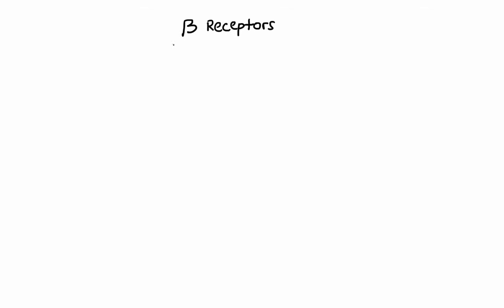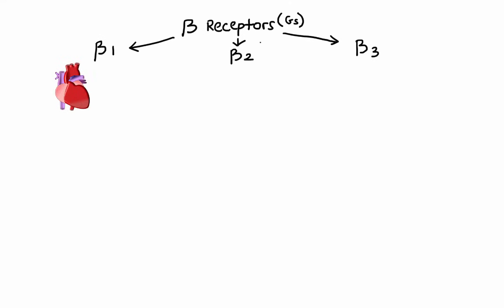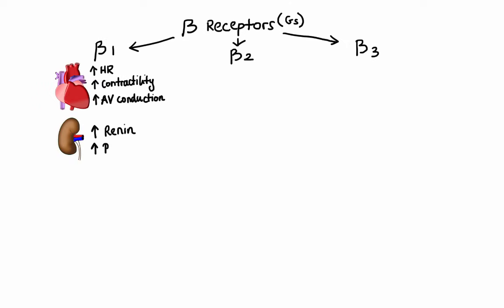Now let's move on to beta receptors. Beta receptors can be divided into three groups: beta-1, beta-2, and beta-3. Unlike alpha receptors, beta receptors are coupled with Gs protein. Beta-1 receptors are mainly located on the heart, and when activated, they lead to increased heart rate, increased cardiac contractility, and increased AV node conduction. Beta-1 receptors are also located on the juxtaglomerular cells in the kidney, and when activated there, they lead to increased renin release, which results in an increase in blood pressure.